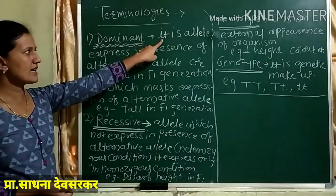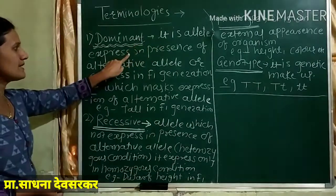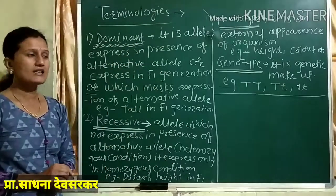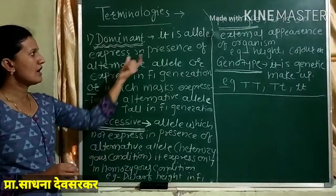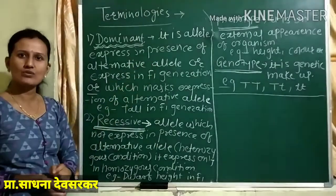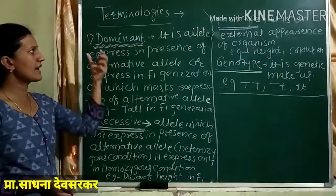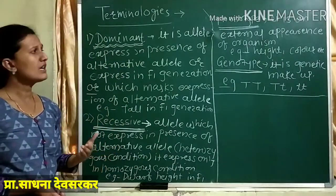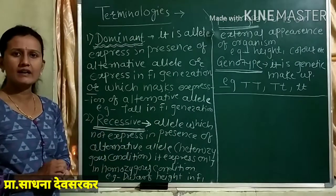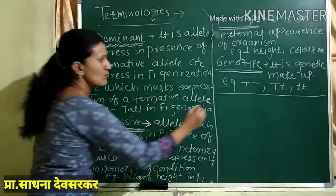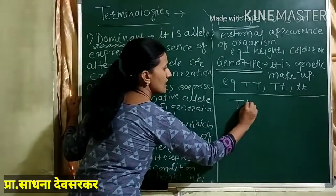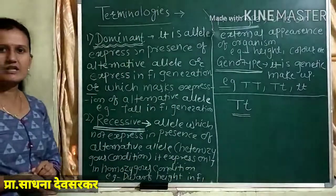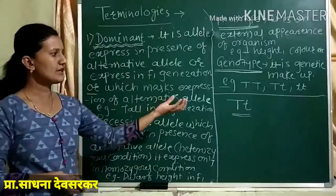Dominant is the allele which expresses in the presence of its alternative allele. Even when the alternative allele is present, we can see the dominant character. We can see the condition of the allele form. For example, we can consider that is the capital T and small t — it is one of the conditions.